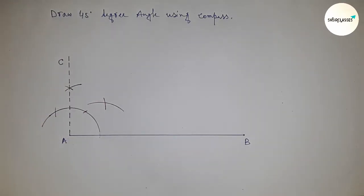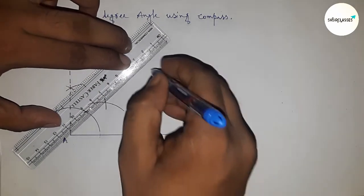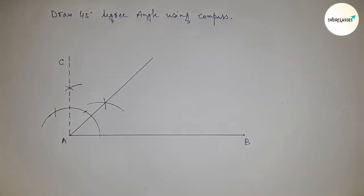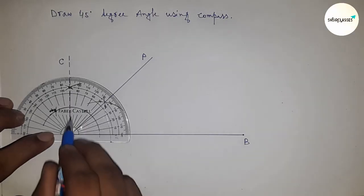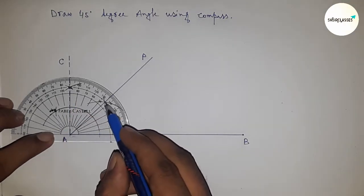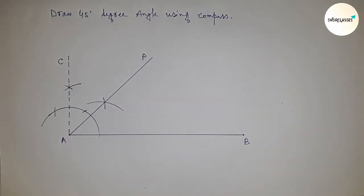Next, join this point to get a 45-degree angle. This is point P. So now we have angle PAB. Let me check whether it is 45 degrees or not. This is perfectly a 45-degree angle.